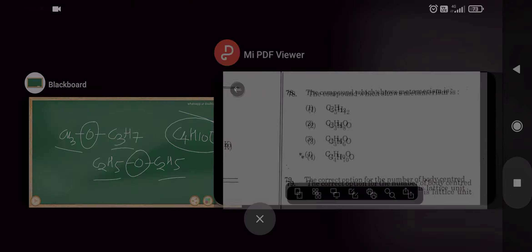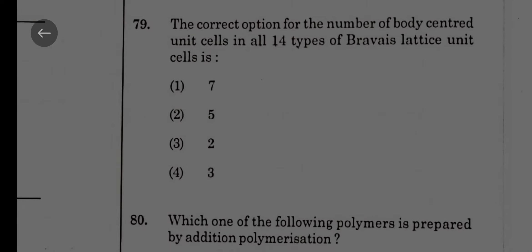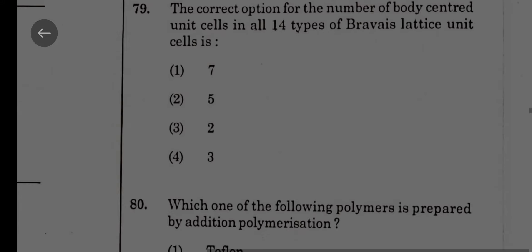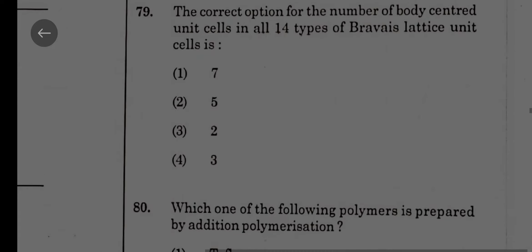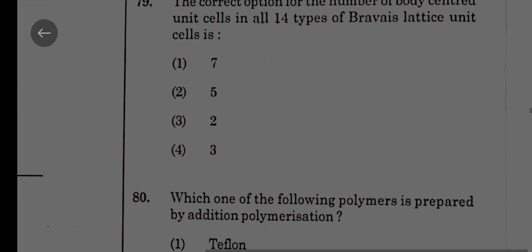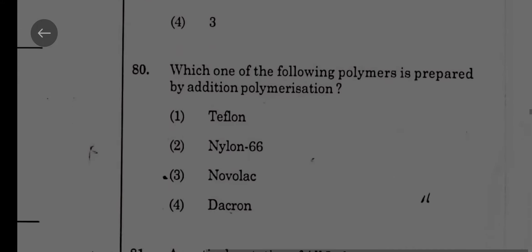The correct option for the number of body-centered unit cells in all 14 types of Bravais lattice unit cells will be three. You can check it from NCERT solid state. Out of 14 types of Bravais lattices, you will be getting three body-centered unit cells.